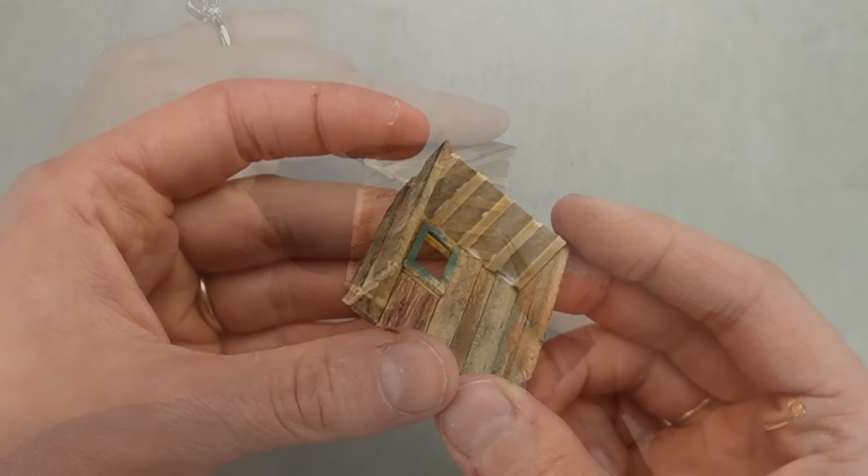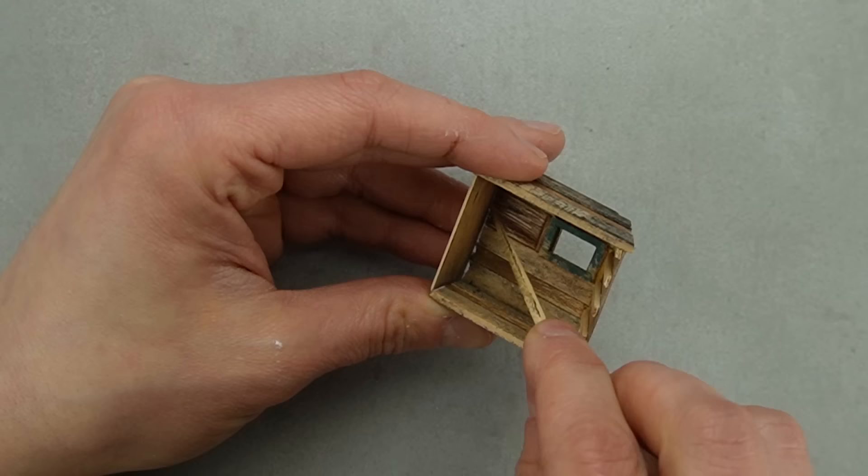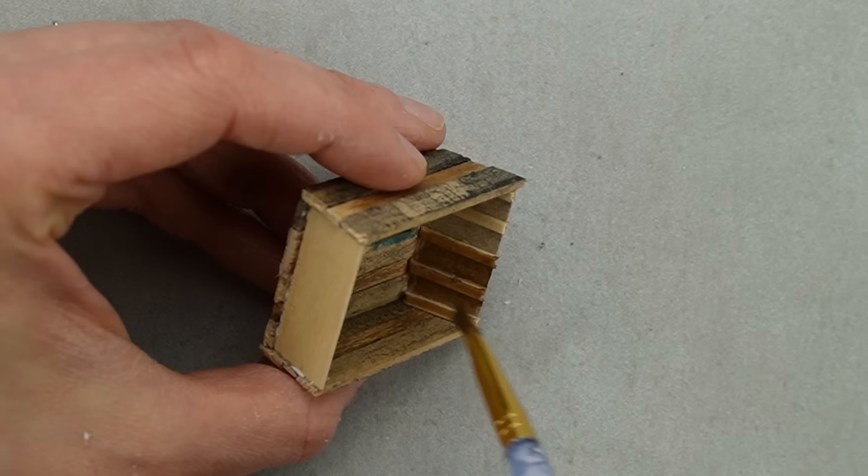I don't always show it, but I do remove any excess glue using a toothpick. To unify the stir sticks and cereal box, I gave the ceiling a coat of watered down brown paint.